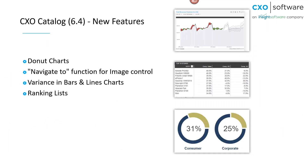Besides the CXO catalog, we've added more features in version 6.4. We already had the pie chart and have now introduced donut charts. In a previous version we introduced the image control — you no longer need a web view control to add an image. In 6.4 we've also added the navigate-to function for the image control, which allows you to link to either a report or a URL. We've also added variance coloring in bar and line charts, and ranking lists.